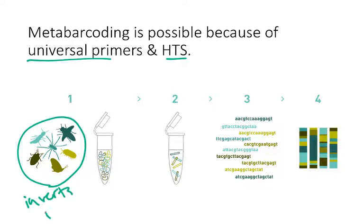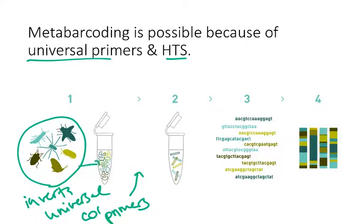Because there are universal CO1 primers available that can amplify DNA from all of these types of species, we're able to do metabarcoding. Walking through the workflow: we have our bulk sample, we're taking DNA from all of those species and all individuals present. And remember, because it's barcoding, we're only looking at one particular region of the genome — CO1. Once we do this universal primer PCR step, what we end up with is just a CO1 fragment from each of those species, which is the only region we need.